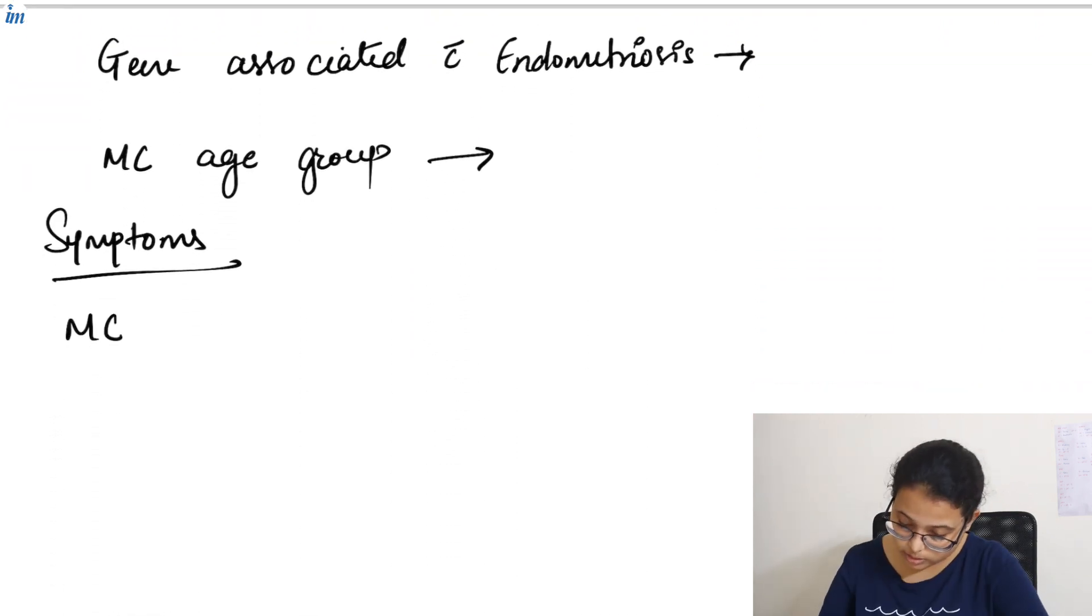So gene associated with endometriosis is K-RAS and most common age group affected with endometriosis is 30 or more than 30.